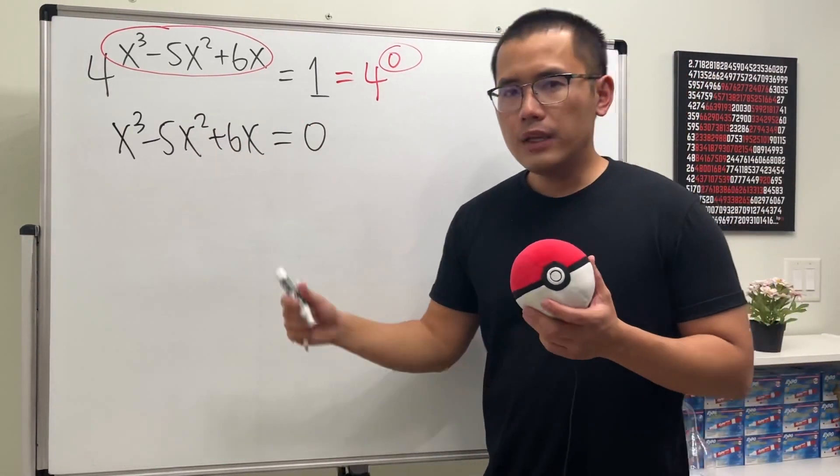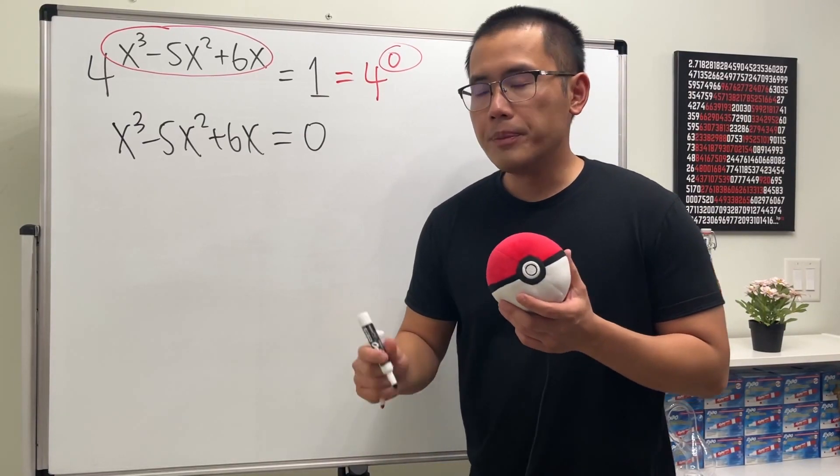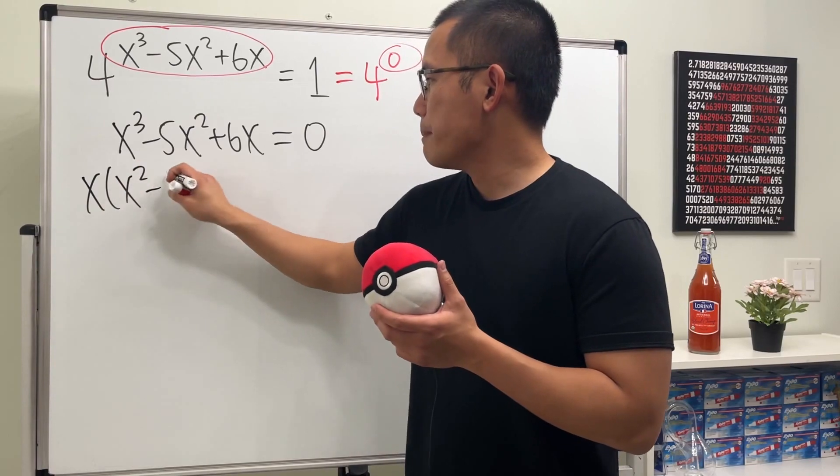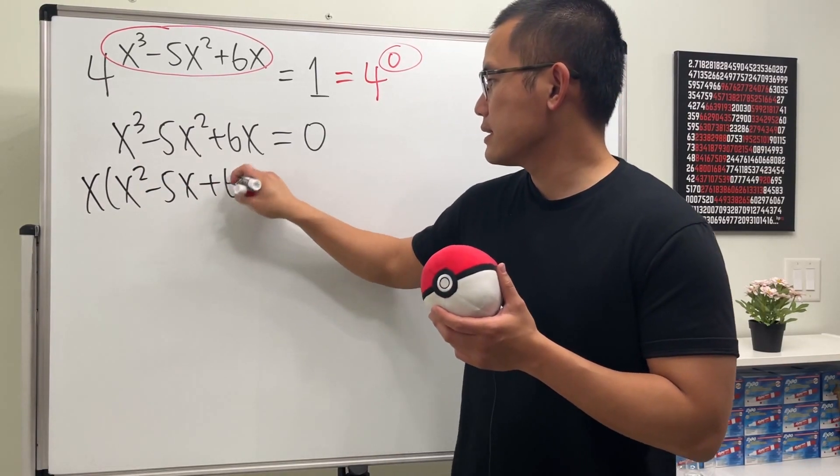Because first we can take out an x, and then we just get x² minus 5x plus 6, and that's equal to zero.